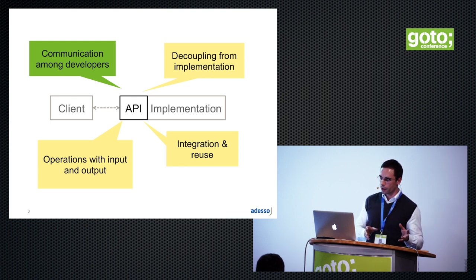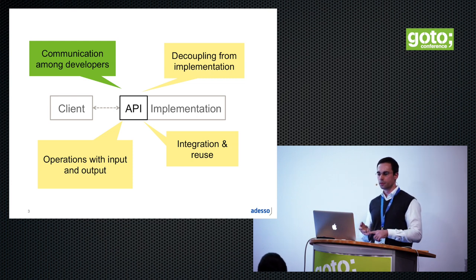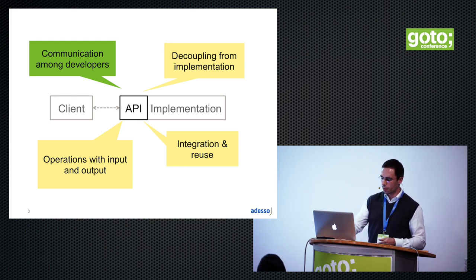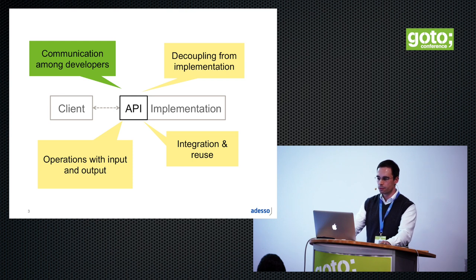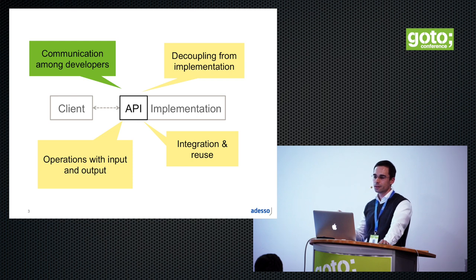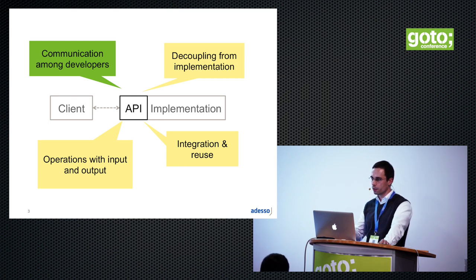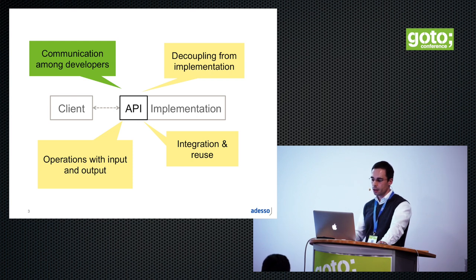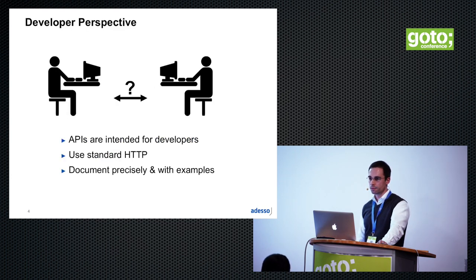The API is optimised for integration and reuse. That means we have different quality attributes for the API and our implementation. The implementation is probably optimised for performance, maintainability, testability, and so many other quality attributes. But the API is something else — it should be easy to understand, easy to use, easy to learn, and many other similar attributes. There is another function that is sometimes forgotten: communication among developers.